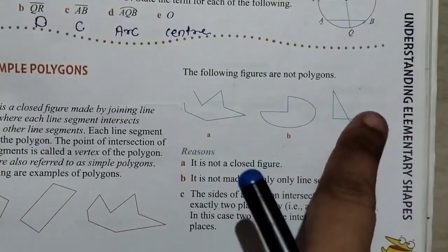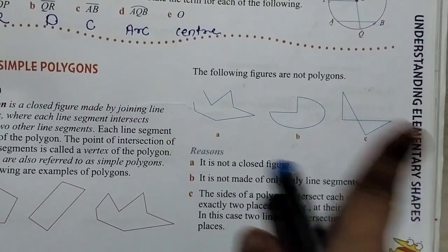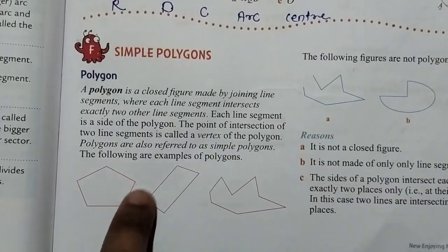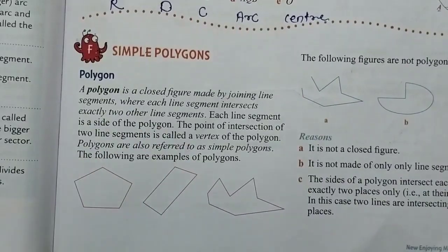This is not polygons. The polygons do not bisect and do not intersect. So these are not polygons. But this is closed, these are straight lines. So what are polygons?